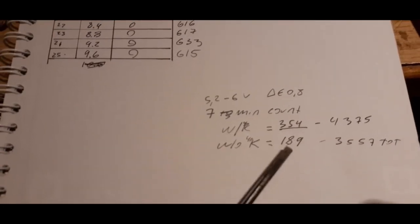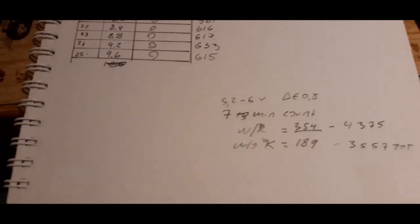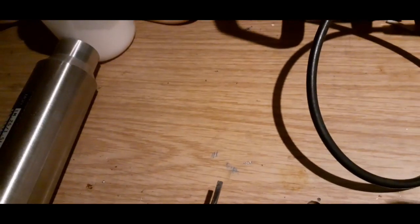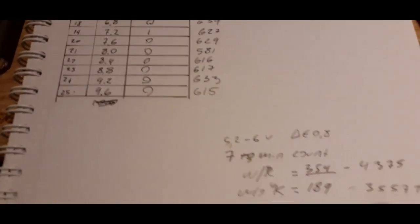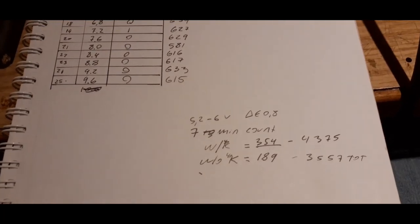Now the reason the count doesn't drop any lower than that, 189 is still quite a lot of counts, I think is because it's natural background potassium in the wood table. Of course, potassium carbonate used to be extracted from wood ash, so it stands to reason that there should be a lot of potassium in wood. But yeah, that's how you do gamma spectroscopy with a single channel analyzer.